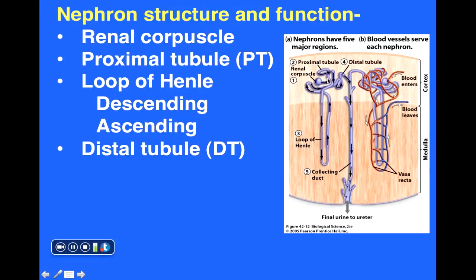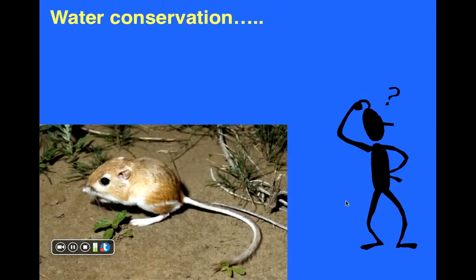Continuing along the nephron, we have another convoluted region — the distal tubule. Finally, the nephron connects to the collecting duct, which collects all of the urine produced in the thousands of nephrons within our kidneys and carries it out of the kidney on its way to our bladder.